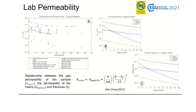Laboratory single fracture stress-permeability measurements can be used to derive empirical relationships between the applied stress and the fracture aperture. Zhang (2013) derived a relationship between the gas permeability of the sample (kappa_core), the permeability of the matrix (kappa_matrix), and the fracture aperture (B). The model gives a relationship between the applied stress and the total permeability of the sample, which can be used to produce a general relationship for fracture aperture as a function of the applied normal stress.